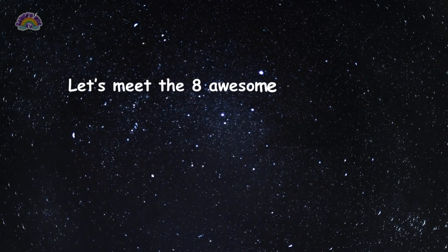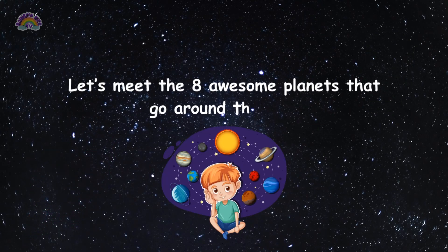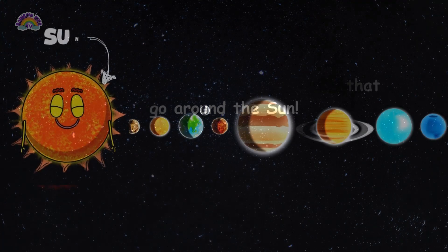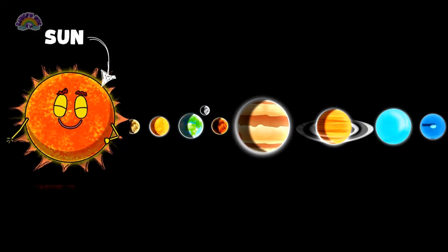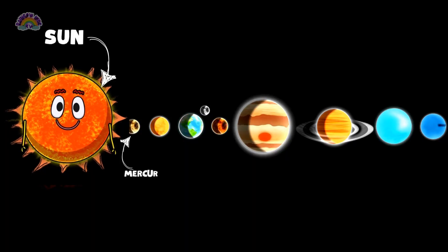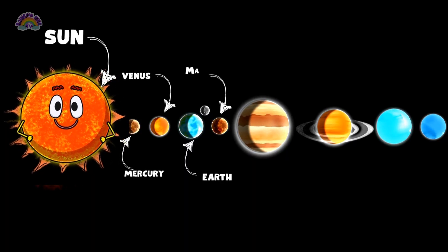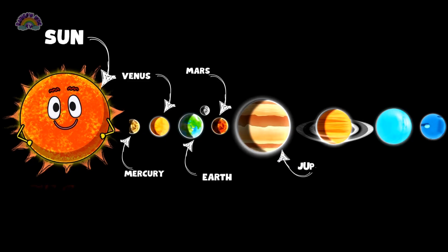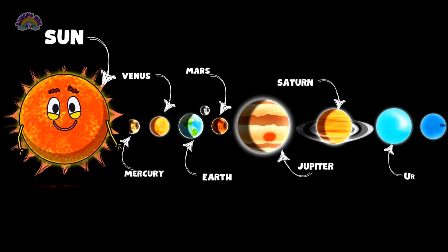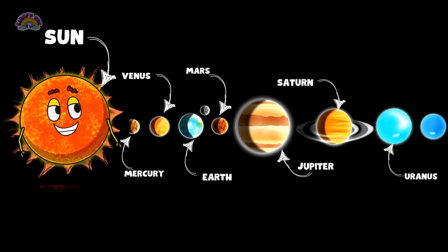Let's meet the 8 awesome planets that go around the Sun. There are Mercury, Venus, Earth, Mars, Jupiter, Saturn, Uranus and Neptune.